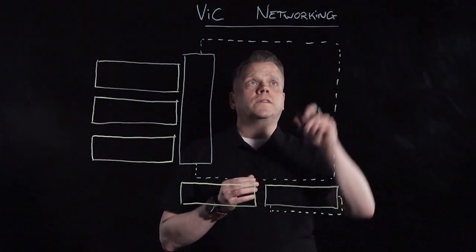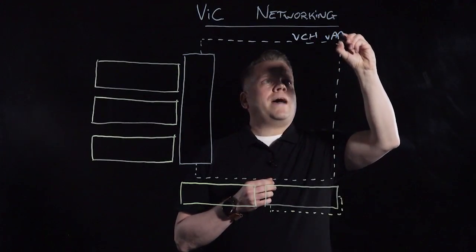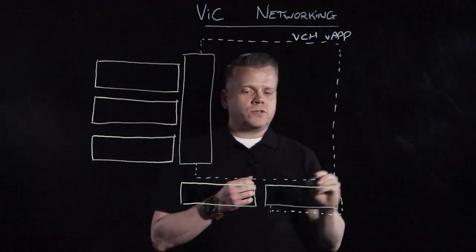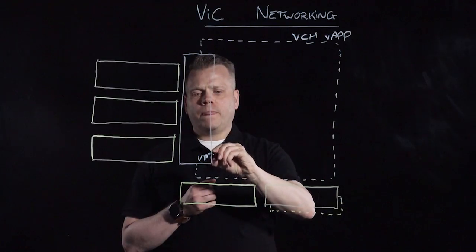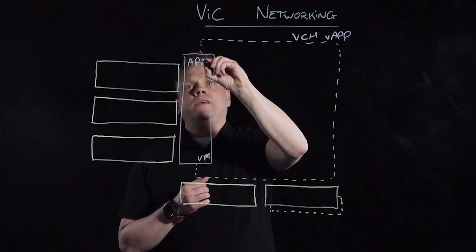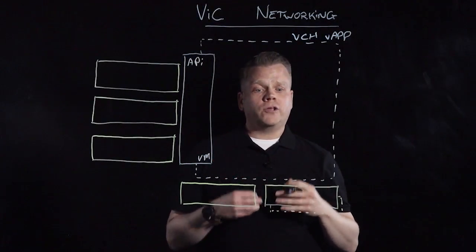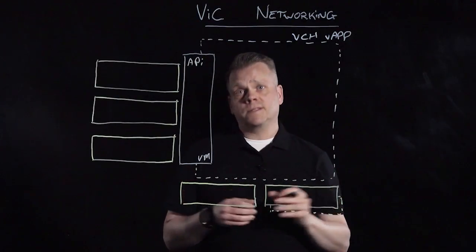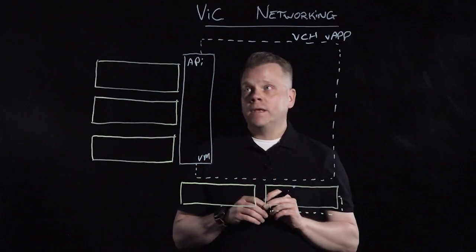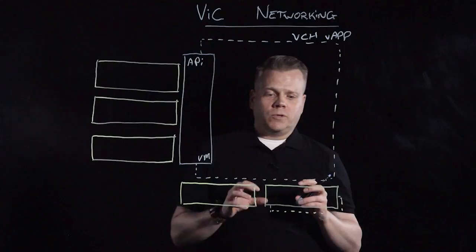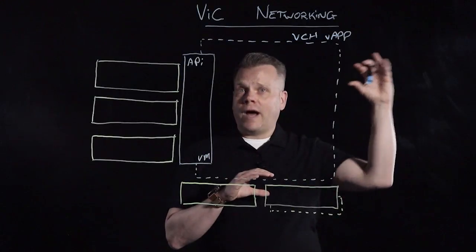With vSphere Integrated Containers, we start with this virtual container host construct. The way this works is we wrap it inside of a vApp, which gives us a resource pool from a resource management perspective, and then inside of that vApp we provision one VM that acts as your Docker API endpoint.